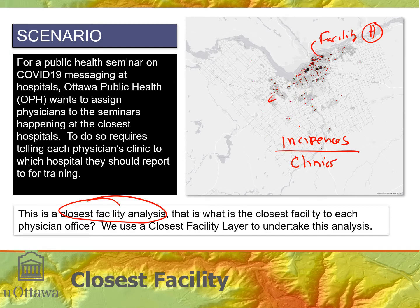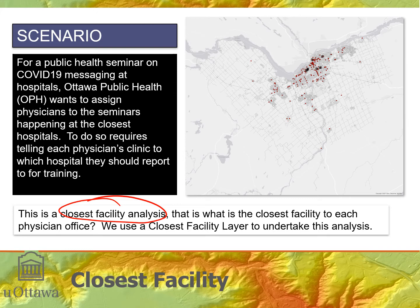That's called the closest facility analysis, and the names of the network classes are facilities and incidences. Remember: facilities are always the things you want to go to, and incidences are the things you want to go from.